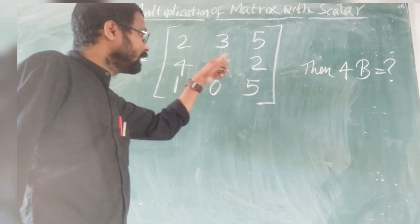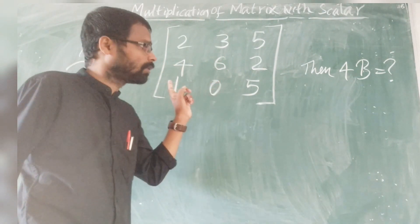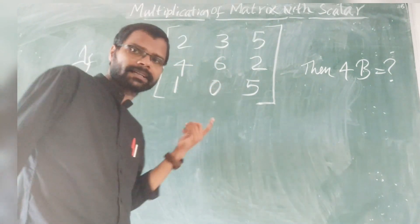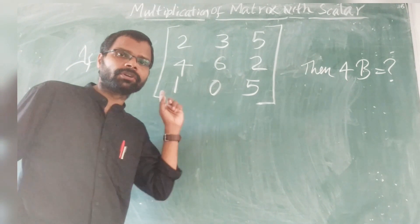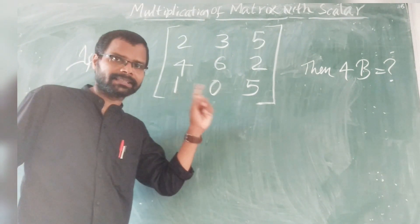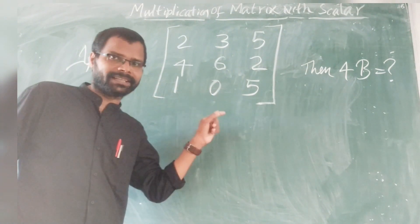Here we have the matrix elements: 2, 3, 5, 4, 6, 2, 1, 0, 5. We have a 3 by 3 Matrix — that is, a Matrix of order 3.